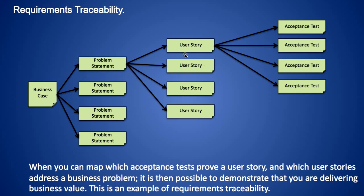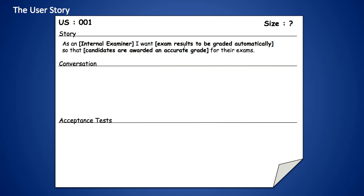Let's take a look at a slightly more detailed example. We have an example user story here. We're right at the very start; we're not sure what size this user story is or how long it's going to take us to implement. The story is: As an internal examiner, I want exam results to be graded automatically so that candidates are awarded an accurate grade for their exams.